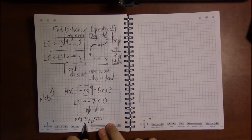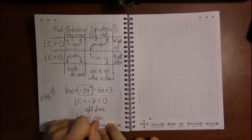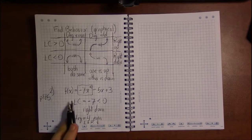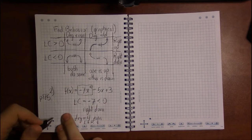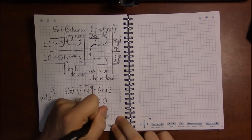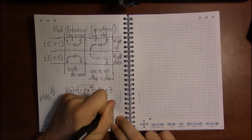So both left and right will go down, which means the end behavior of this polynomial is going to be both ends going down.